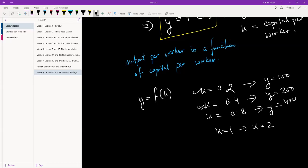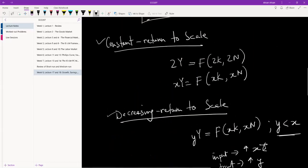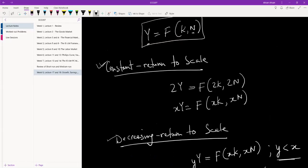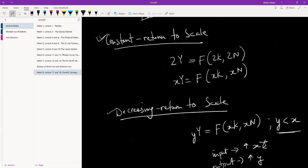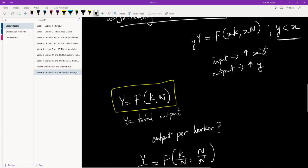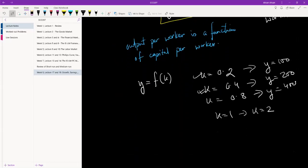So constant returns to scale works in a very limited number of times, but a more realistic scenario is decreasing returns to scale. So more laptops will obviously improve our output, I'm not saying it will not, but not at a constant rate. If the number of laptops in the economy increase by 50 percent, maybe our output, the country's output, will increase by 20 percent, okay, but definitely not by 50 percent.